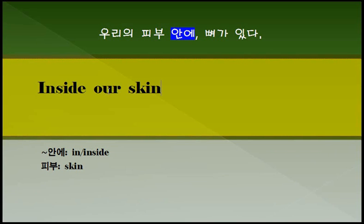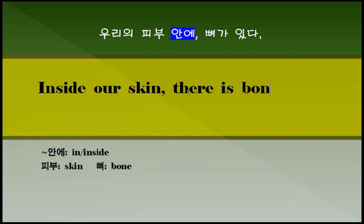Inside our skin. 이렇게 우리가 표현할 수 있습니다. 다음에 뼈는 영어로 뭡니까? 뼈는 bone이 되겠죠. 무엇이 있다, 뼈가 있다. 있다 없다 할 때는 there is, there are 이런 표현을 쓰면 되겠죠. 이제 문장 보세요. 우리 피부 안에 뼈가 있다. Inside our skin, there is bone. 그런데 뼈가 한 개 있으면 there is a bone 이렇게 써줘야 됩니다. 그런데 뼈가 여러 개 있죠. 그래서 복수형으로 쓰는 것이 좋습니다.